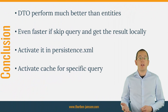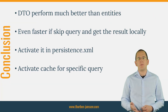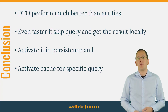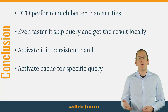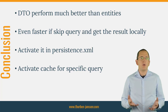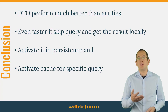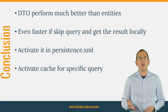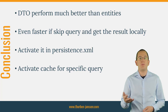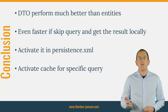DTO projections perform much better than entities if you want to read data from the database. In this test, the DTO projection gave me about a 40% performance improvement. And your application will be even faster if Hibernate can skip the query and get the result from local memory. You can achieve that with Hibernate's query cache: activate it in your persistence.xml by setting the hibernate.cache.use_query_cache parameter to true, then activate the cache for a specific query by setting the query hint queryhints.cacheable on your JPA query or by calling the setCacheable method on Hibernate's query interface.